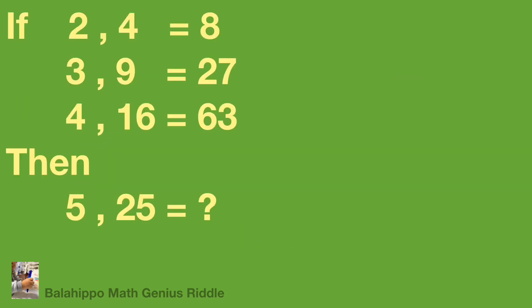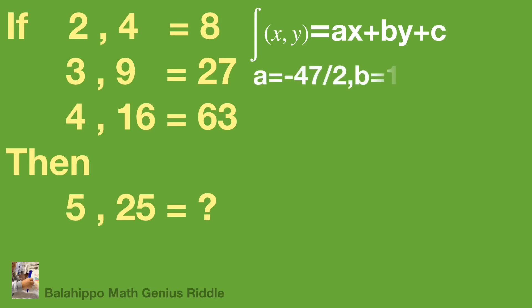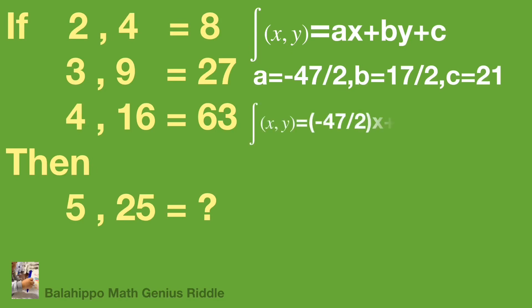So our function is f(x, y) = ax + by + c. Substituting the values of a, b, and c into this polynomial: